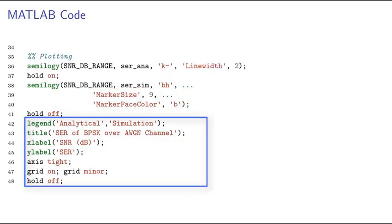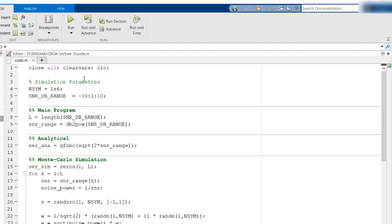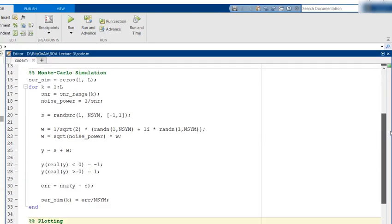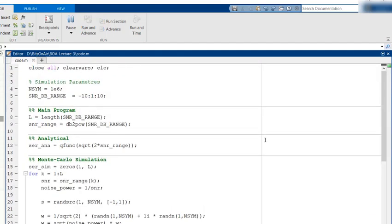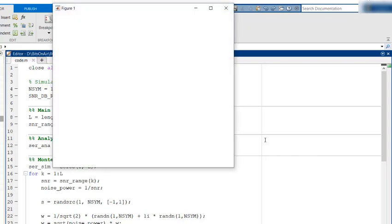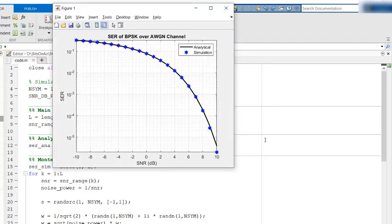Finally, we configure the labels and axes in this part of the code and we are done. Let's now execute this code and see what we get. Here is the MATLAB code that we have just discussed. Let's execute this code now. The code is currently executing. Let's wait for the code execution to finish. Execution is done and here is the plot.